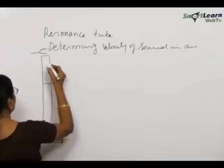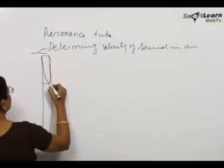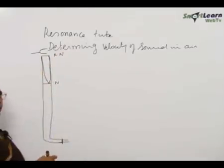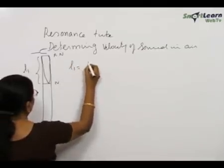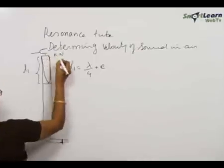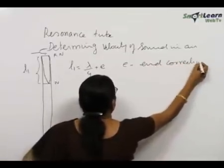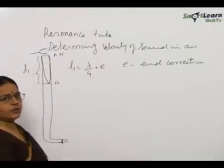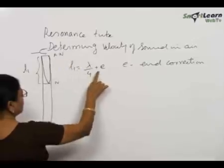When we reach a point called resonance, the tube acts like a closed tube with a node at the water surface and an anti-node at the top, and standing waves are produced inside. We measure this length as L1, where L1 equals lambda by 4 plus E. E is the end correction, because the anti-node is not formed exactly at the mouth of the tube — it forms a little above the mouth, and this distance is called the end correction E.